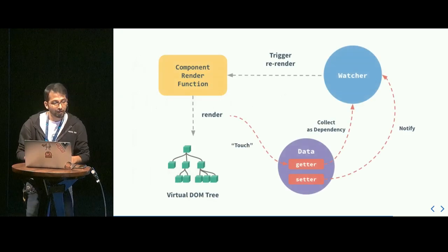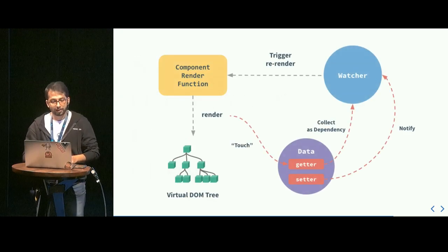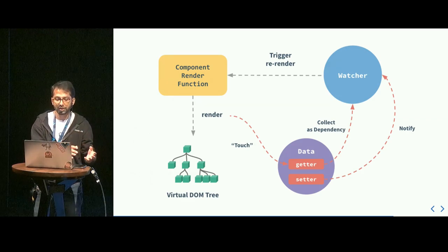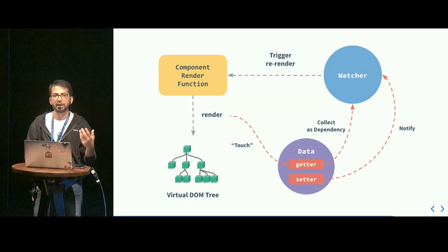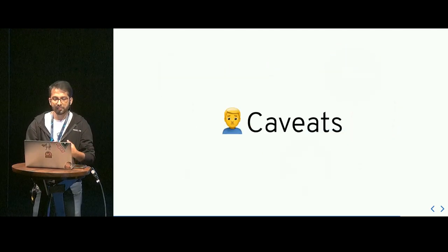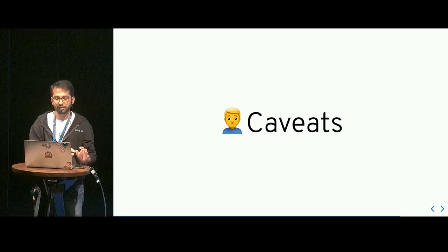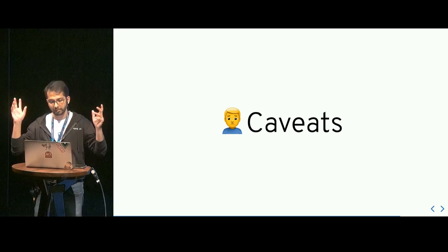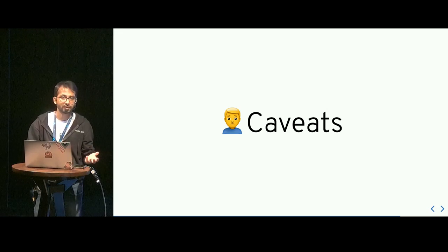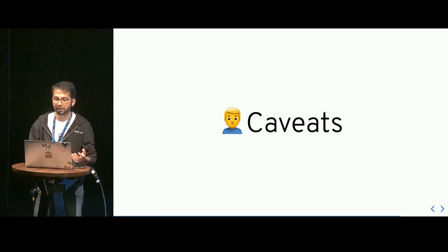We can now go back and look at that diagram from Vue.js documentation and it might start to make more sense. The system we have built is great — but it's not flawless. There are edge cases we haven't covered.